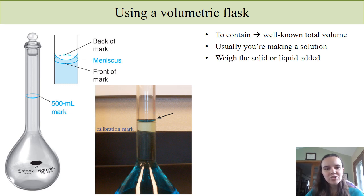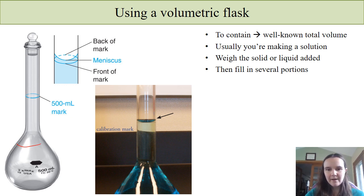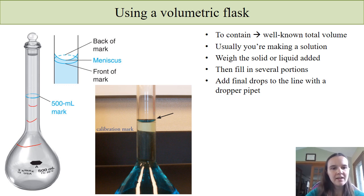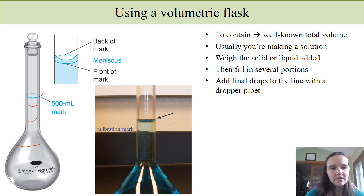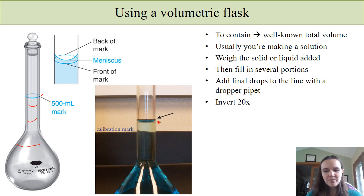You are usually making a solution, so you need to weigh the solid or liquid that you're adding. It's being diluted, and then you're going to fill this flask up in several portions. With each portion — say maybe 80 percent full — you're going to mix it. As you get closer and closer to the line, then you're going to do the final drops to the calibration mark, which you can see here. You always do those final drops with a dropper pipette. The number of times I've seen somebody use the squirt bottle to add water to a volumetric flask — that neck is very narrow and a very small amount of solution will change the level a lot and they'll shoot right past it. So use a dropper pipette and always make sure you're thoroughly mixing — invert it 20 times.